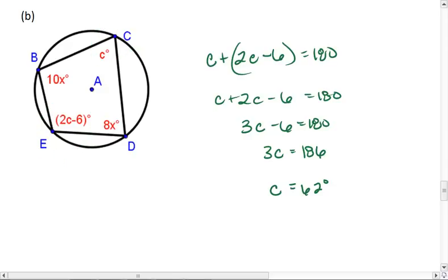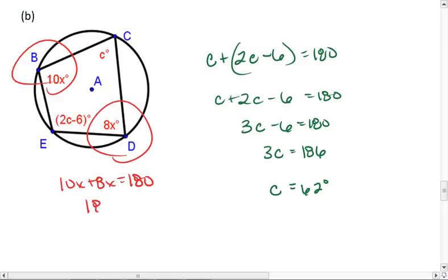Then, B is opposite D. So 10X plus 8X equals 180. 18X equals 180. X equals 10. Thus, my final answer is that X equals 10 and C equals 62.